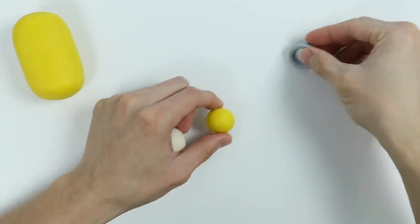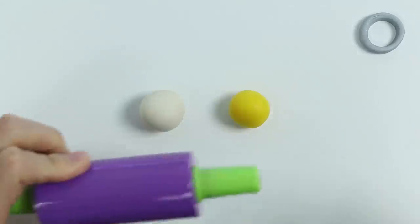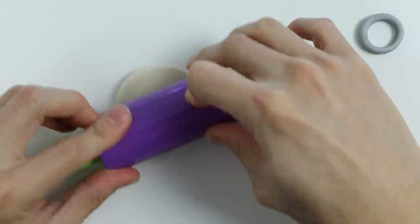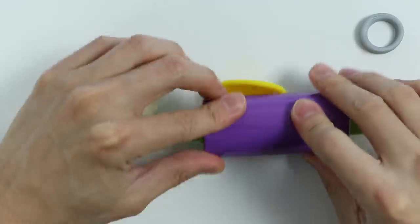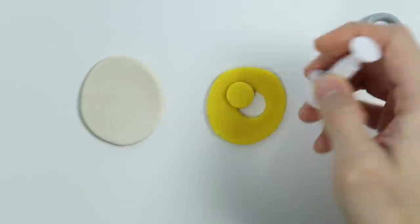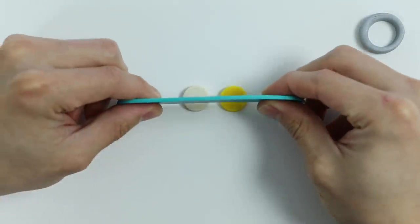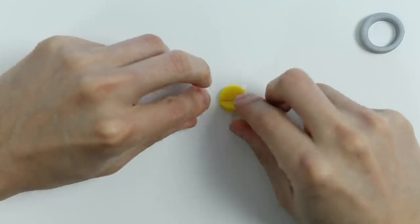Alright, now let's roll out a little bit of white and yellow Play-Doh. Now let's stamp out two circles. Perfect! Cut these in half. Now we need the top white part and the bottom yellow part.